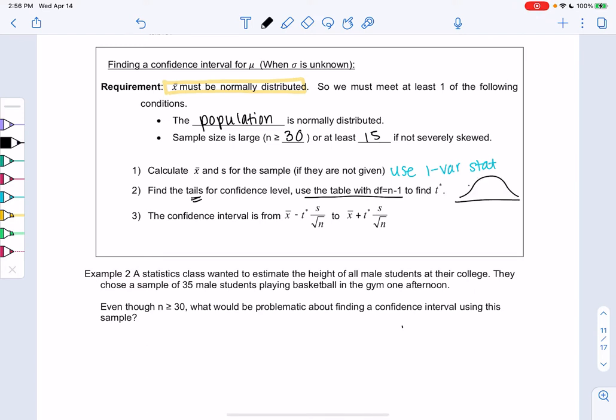And then we'll use the table to find the T-score, right? Because we're using T-score now. And then our formula for confidence interval, we plug in.